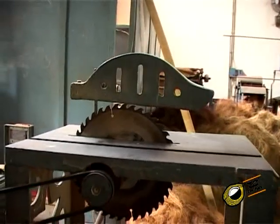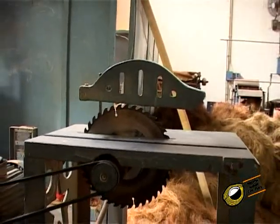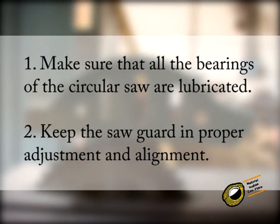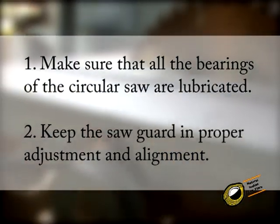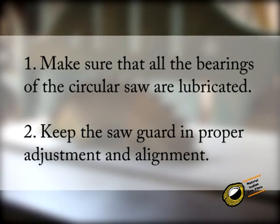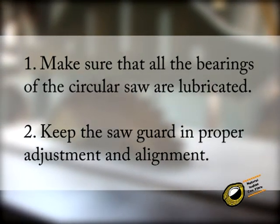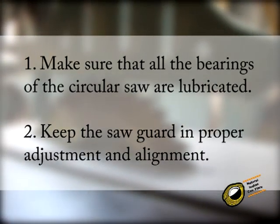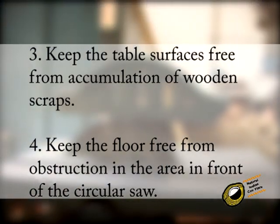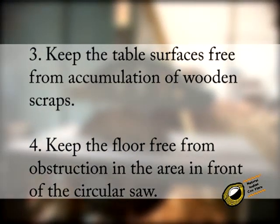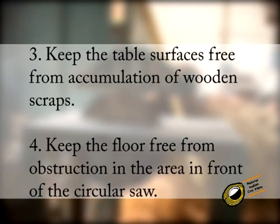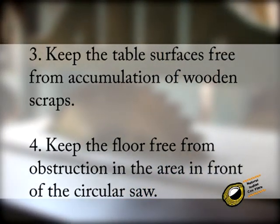Safety rules should be followed while operating the circular saw: 1. Make sure that all the bearings of the circular saw are lubricated. 2. Keep the saw guard in proper adjustment and alignment. 3. Keep the table surfaces free from accumulation of wooden scraps. 4. Keep the floor free from obstruction in the area in front of the circular saw.